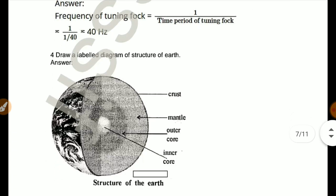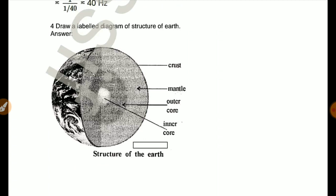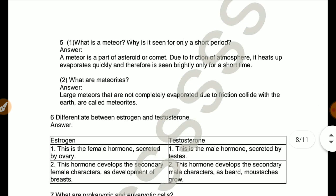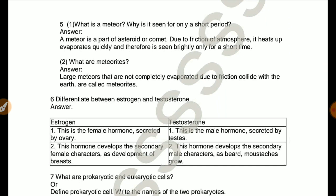Draw label diagram of structure of earth. Here you have a label diagram. What is a meteor? Why is it seen for only a short period? A meteor is a part of asteroid or comet. Due to friction with atmosphere it heats and evaporates quickly and therefore is seen brightly only for a short time. What are meteorites? Meteors that are not completely evaporated due to friction and collide with the earth are called meteorites.